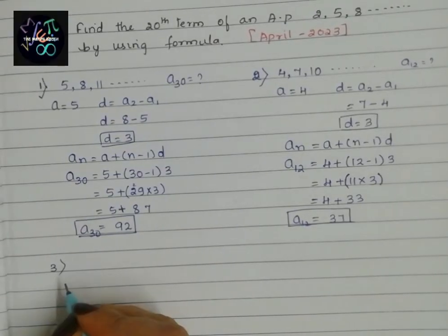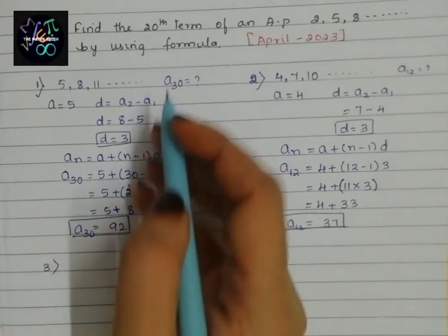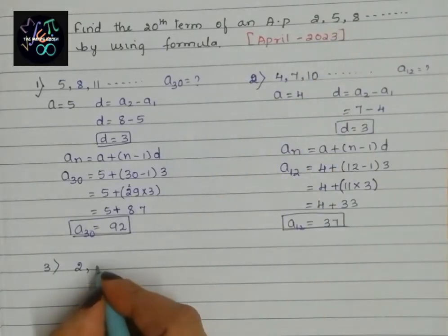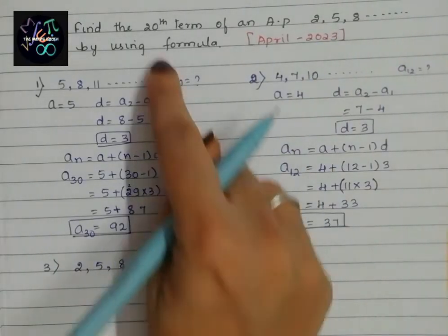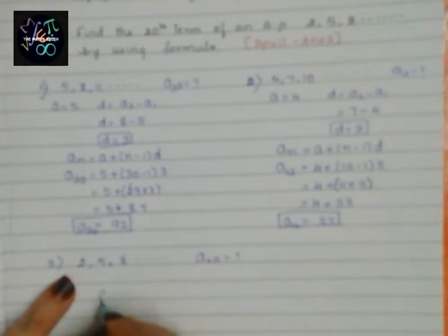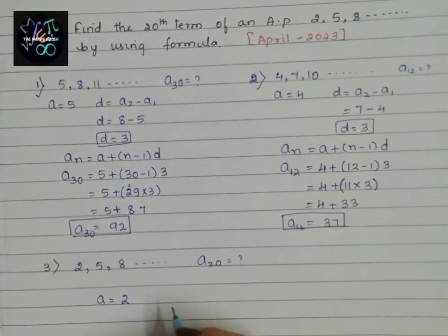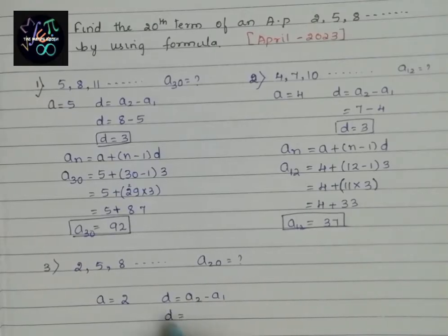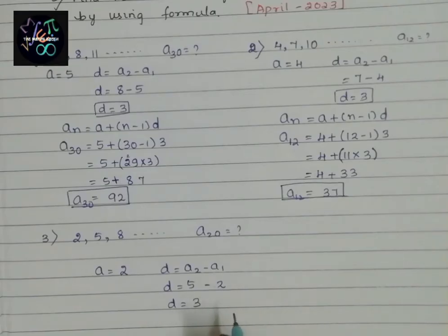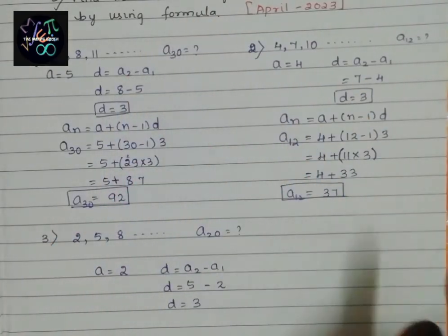Third problem: find the 20th term. The AP given is 2, 5, 8. We have to find A20. The first term A equals 2. D equals second term minus first term, so D equals 5 minus 2, which is 3. By chance, all three questions have a common difference of 3.